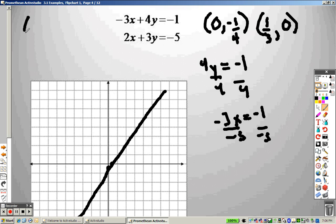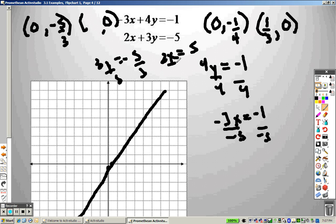I do the same thing over here for the next one. I put in a 0 for x. So that is like saying you have 3y equals negative 5. I divide both sides by 3, and I get negative 5 over 3. Then I plug in a 0 for y, and I end up getting, dividing by 2, negative 5 over 2.